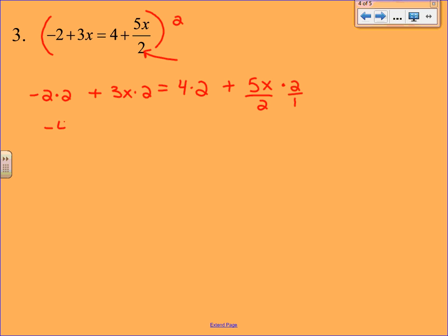So now we simplify. On the left hand side it's negative 4 plus 6x equals 8 plus... Now don't write 10x over 2. The whole purpose in clearing the fractions was to clear out the fraction. So cross cancel. Those 2's cancel. And we end up with 5x.